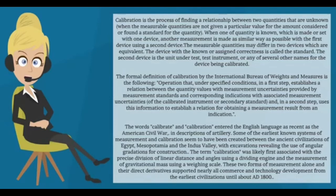The term calibration was likely first associated with the precise division of linear distance and angles using a dividing engine, and the measurement of gravitational mass using a weighing scale. These two forms of measurement alone and their direct derivatives supported nearly all commerce and technology development from the earliest civilizations until about AD 1800.